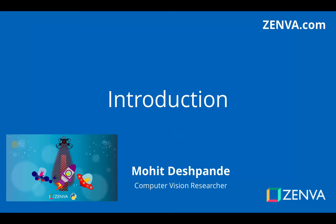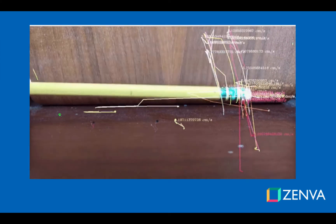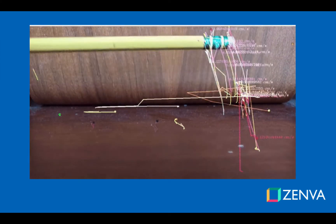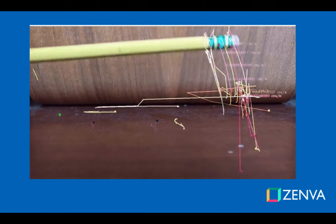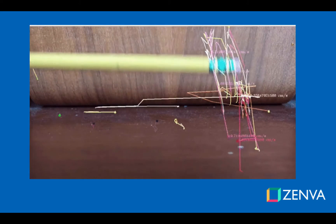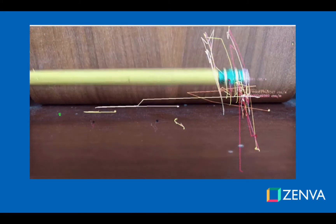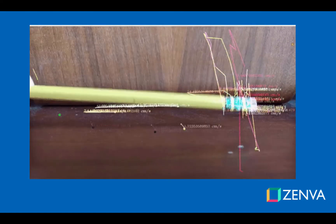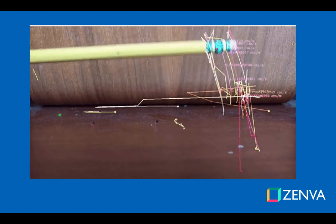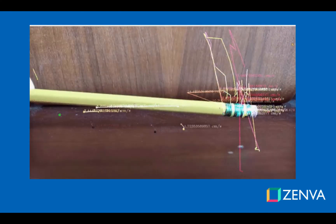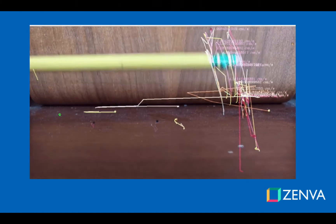Hello everybody, my name is Mohit Deshvande and in this course we're building an app that can track objects through video and actually determine what their speed is based on certain properties of our camera. I've shown this visualization here — you can see that I have a pencil that I'm waving, and there are points being tracked on that pencil and we can get speed readings from those points. That's what we're going to be building in this course, and you can try this out with other objects as well.